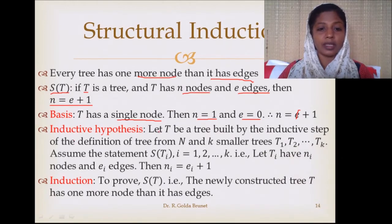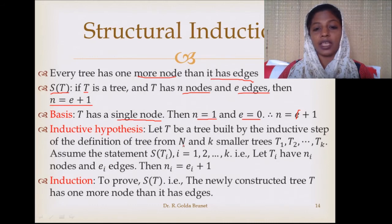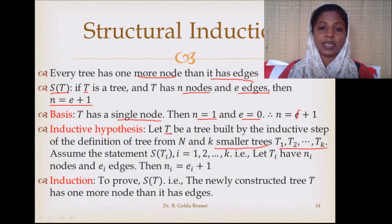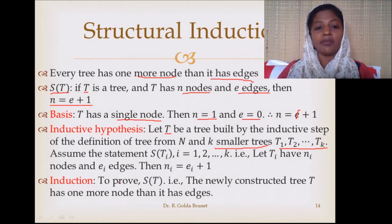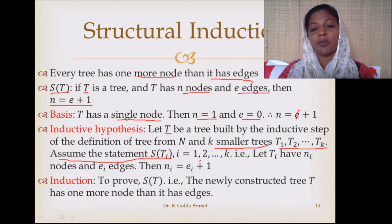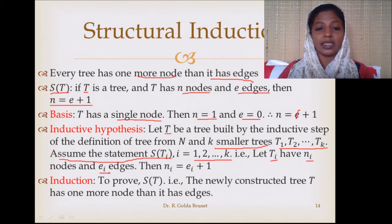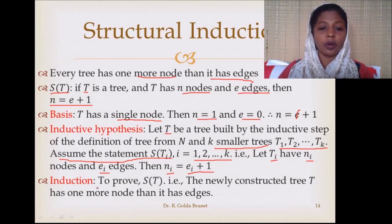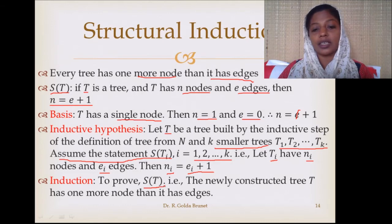The inductive hypothesis is: let t be the tree built by the inductive step of the definition, formed from node n and k small subtrees t1 to tk. We assume that each of these subtrees satisfies the theorem — that is, s(ti) for i from 1 to k is true. Suppose ti has ni nodes and ei edges, then ni = ei + 1. We now need to prove the newly formed tree also satisfies this condition — that it has one more node than its edges.